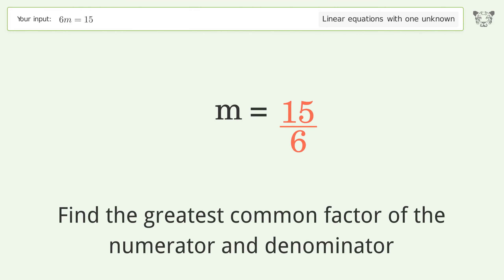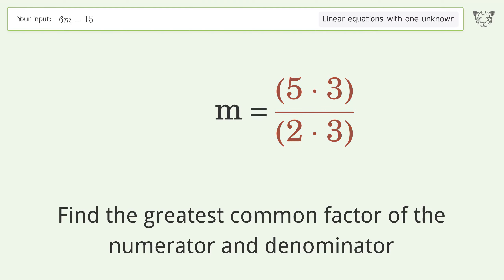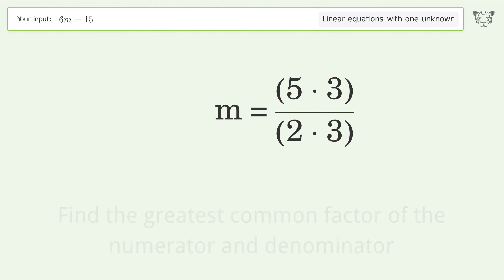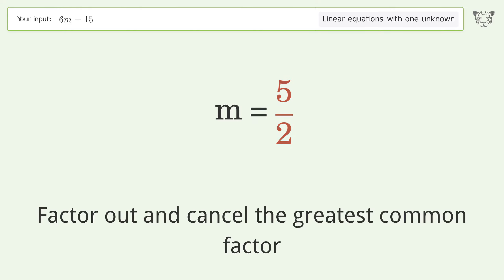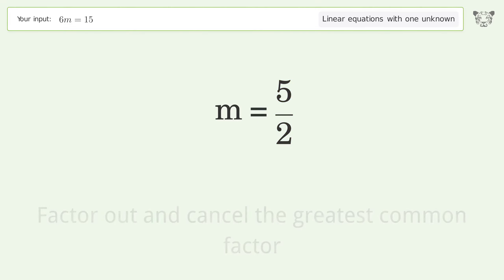Find the greatest common factor of the numerator and denominator, then factor out and cancel the greatest common factor. The final result is m equals 5 over 2.